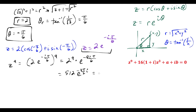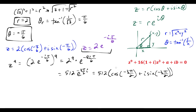Expanding back into polar form: 512 times cosine of negative 3 pi over 2 plus i sine of negative 3 pi over 2. Cosine of negative 3 pi over 2 equals zero — going negative 270 degrees brings us to the north position at pi over 2 — so that term cancels out. Sine of negative 3 pi over 2 equals 1, so z to the ninth equals 512i. We also need z to the third power, so we repeat this process.